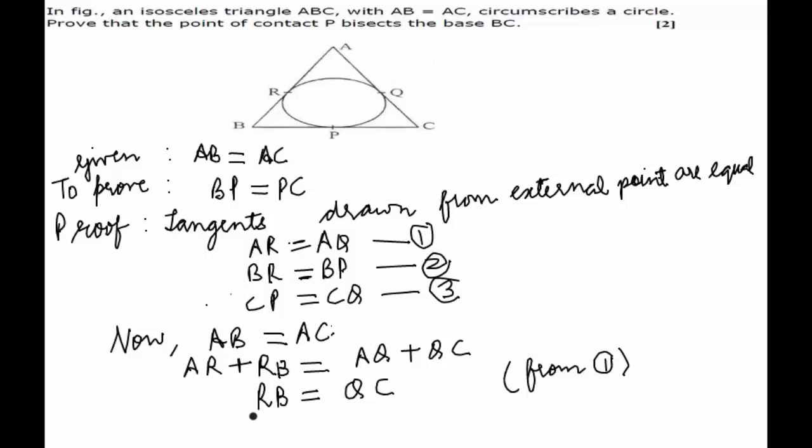RB was also equal to BP and QC was also equal to CP from equations 2 and 3 respectively. Thus we have proved that P is the midpoint of BC.